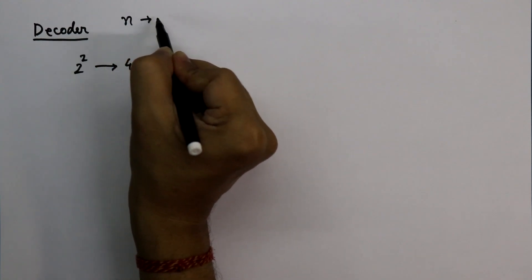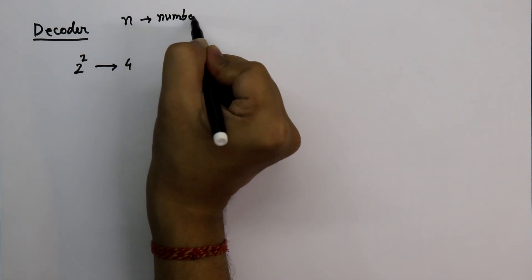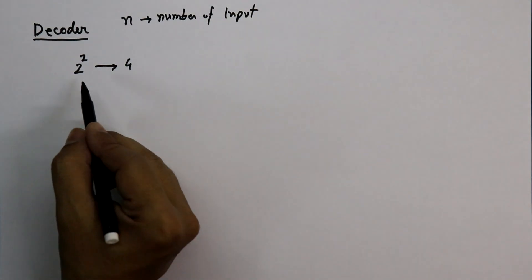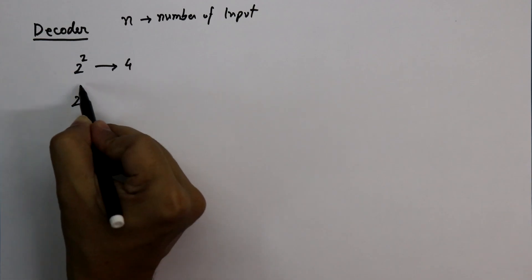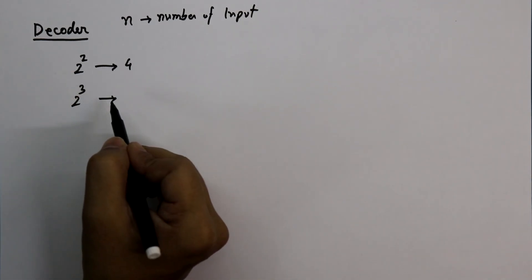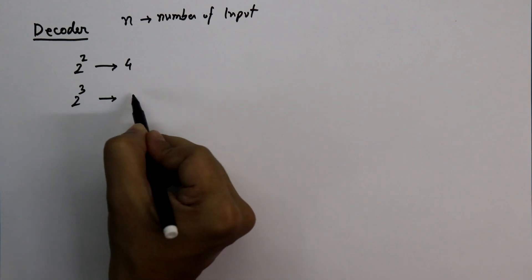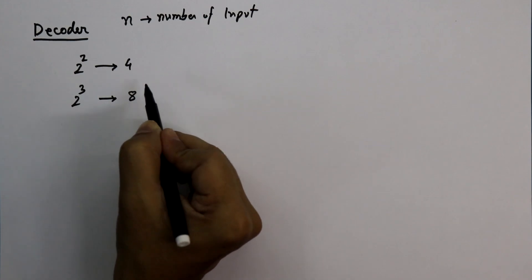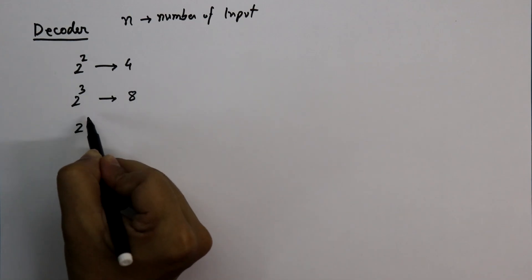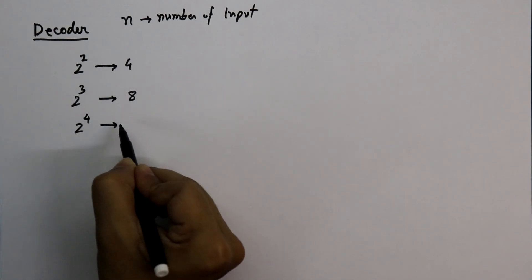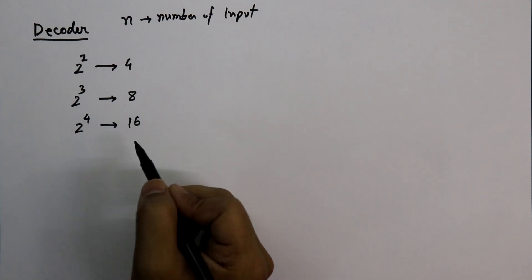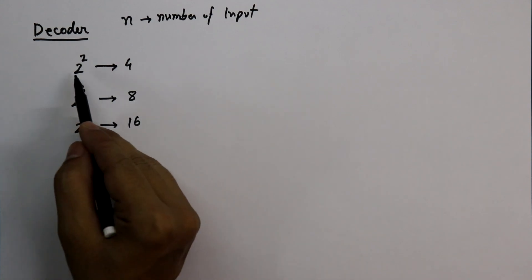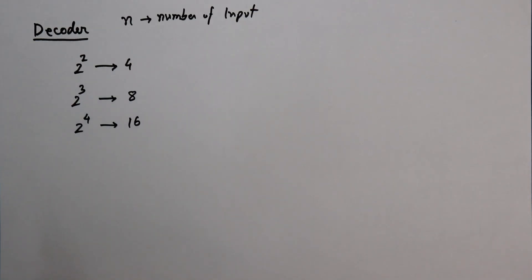n equals the number of inputs. If you have three inputs, then the number of outputs will be 2 cubed, which means 8. If you have 4 inputs then you will have 16 outputs. Today we are going to design a 2-to-4 line decoder.